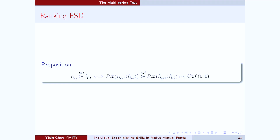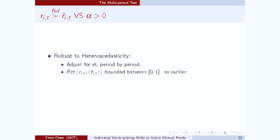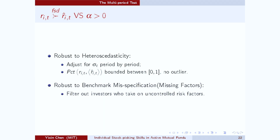But here, we are looking for skilled stock pickers. Therefore, I require the ranking distribution of the investor to first-order stochastically dominate the standard uniform distribution, which is equivalent to requiring the return distribution of this investor to first-order stochastically dominate the return distribution of the counterfactual portfolio. Since first-order stochastic dominance is such a strong condition, it has very nice properties compared to the positive alpha condition. First of all, it's robust to heteroscedasticity. This is easy to understand because when I'm taking the rankings of this investor, I'm essentially adjusting for idiosyncratic volatility period by period.